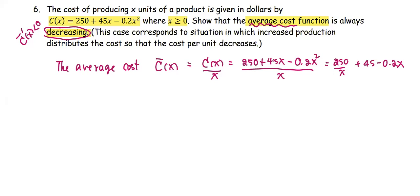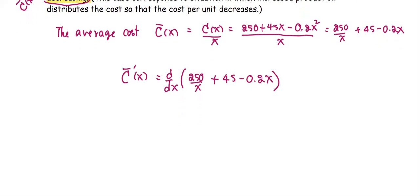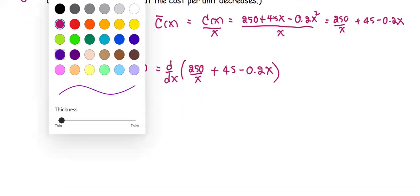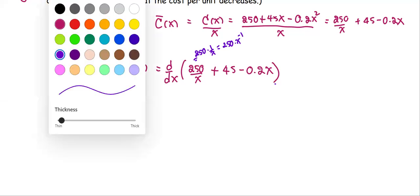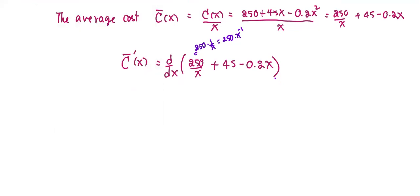After we get C̄(x), we're going to find C̄'(x), which is the derivative of the average cost function, or d/dx of (250/x + 45 - 0.2x). When you find the derivative, the basic rule will be used. 250/x is 250 times x^(-1). To apply the power rule, the first term is 250 multiplied by (-1)x^(-2).